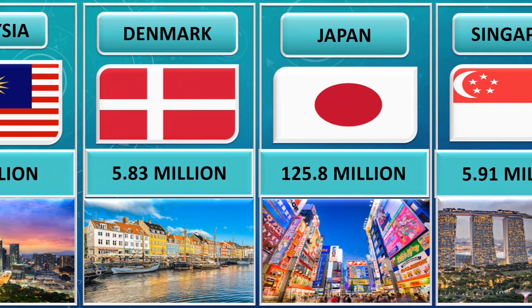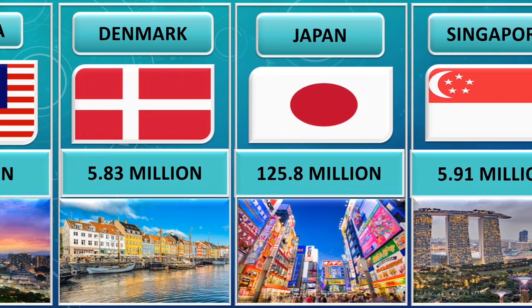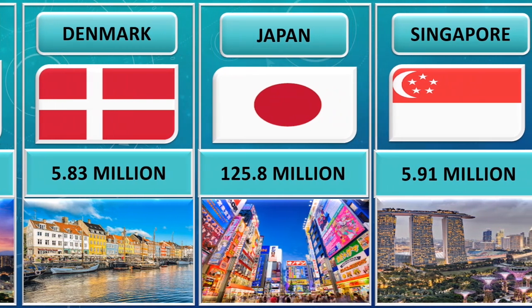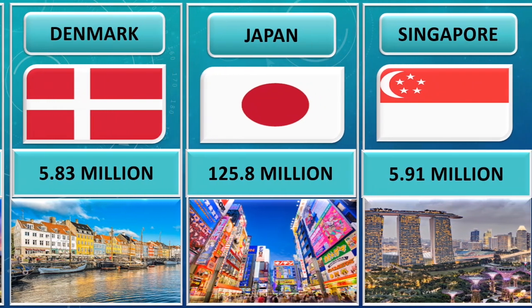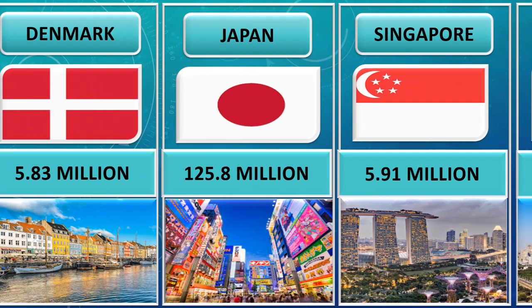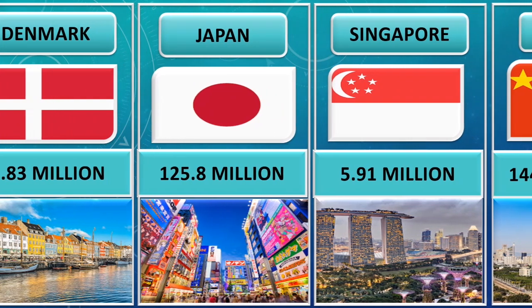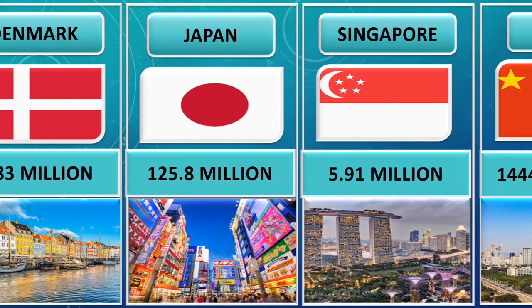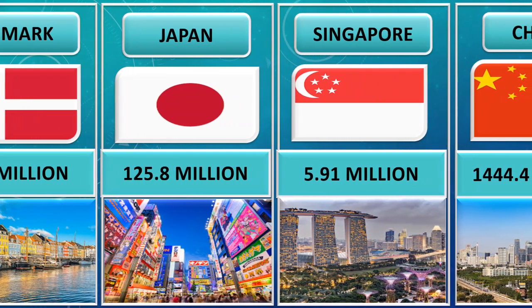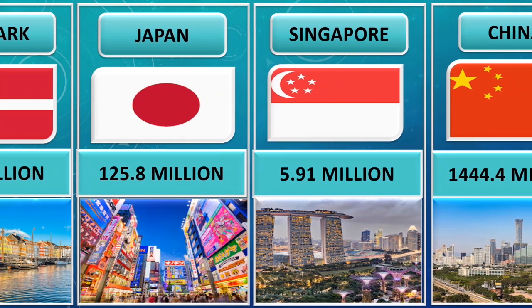Population of Japan is 125.8 million. Population of Singapore is 5.91 million.